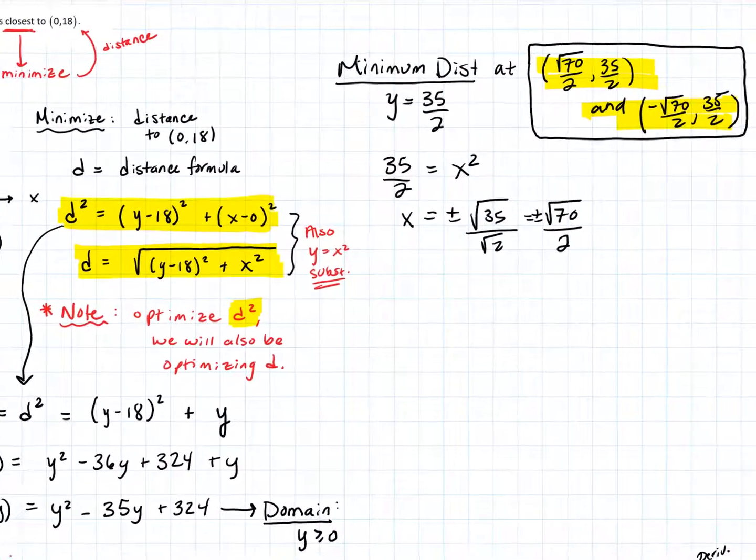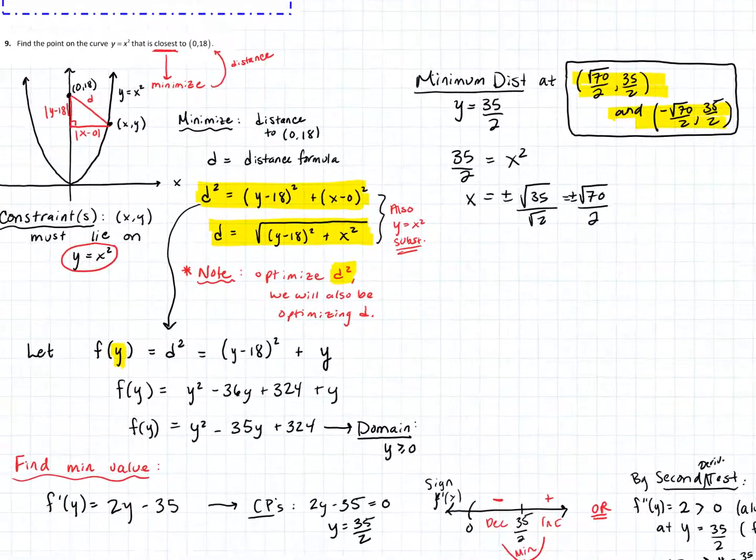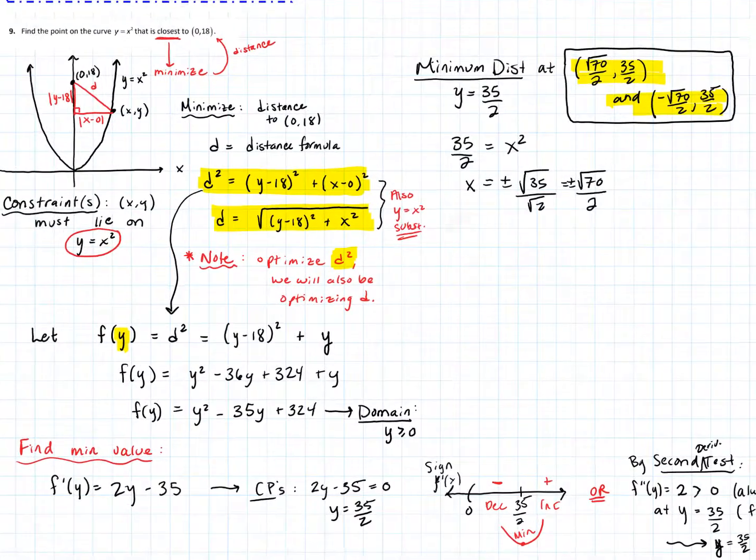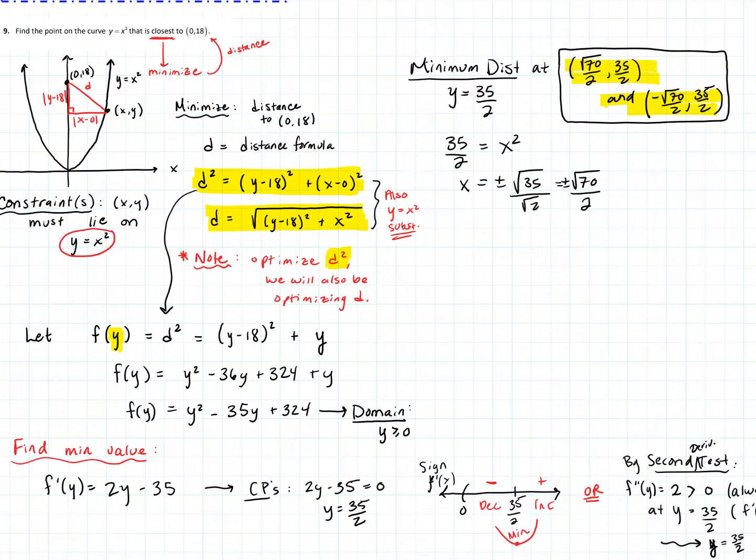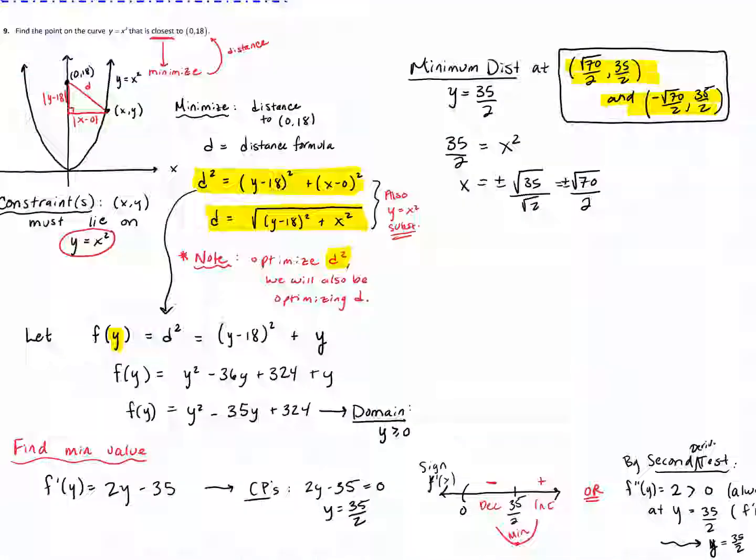We minimize the distance on the curve to that point on the y-axis, (0,18), at those two ordered pairs. Anytime you're looking for a distance and you're using that distance formula, if you would prefer to work with D squared, finding the minimum or maximum of D squared will also give you the minimum of D or maximum of D.